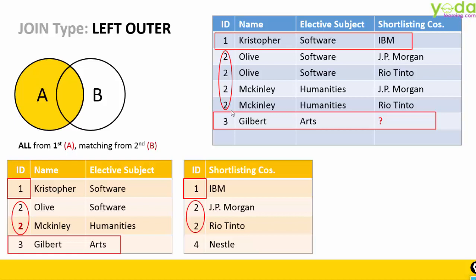If this were VLOOKUP, it would only take the first value and not even look into Rio Tinto. Pause the video for a few seconds and take a look at the output. This is Left Outer Join.